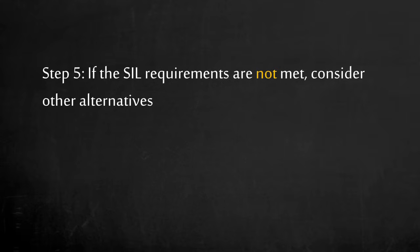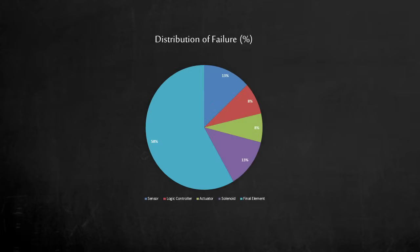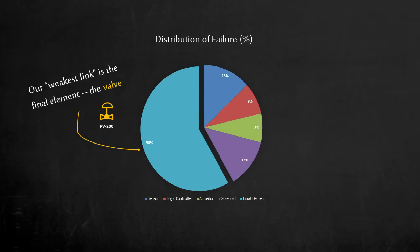Step 5. If you cannot meet the safety integrity level requirements, which is what we've encountered here, you can consider how to improve the reliability of your safety instrumented function. How can we approach this? Let's take a look at the distribution of failure in our current setup. We want to focus on the weakest element first. Now you can see clearly a picture of the weakest link in this safety function. Our weakest link is the final element. Our valve is contributing 58% of the total failure.